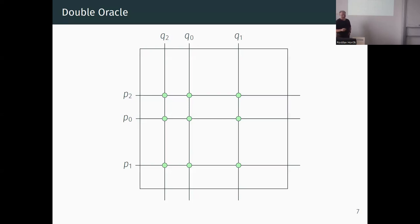The algorithm might go through all possible strategies in the worst case. For example, in rock-paper-scissors you need all strategies for the equilibrium. On the other hand, it's known that a small epsilon-equilibrium exists whose support size is logarithmic in the number of rows and columns. However, it's not known whether there is a reasonable iterative method guaranteeing convergence to an epsilon-equilibrium in a logarithmic number of steps - an interesting open problem. In practice, this usually converges quite quickly.